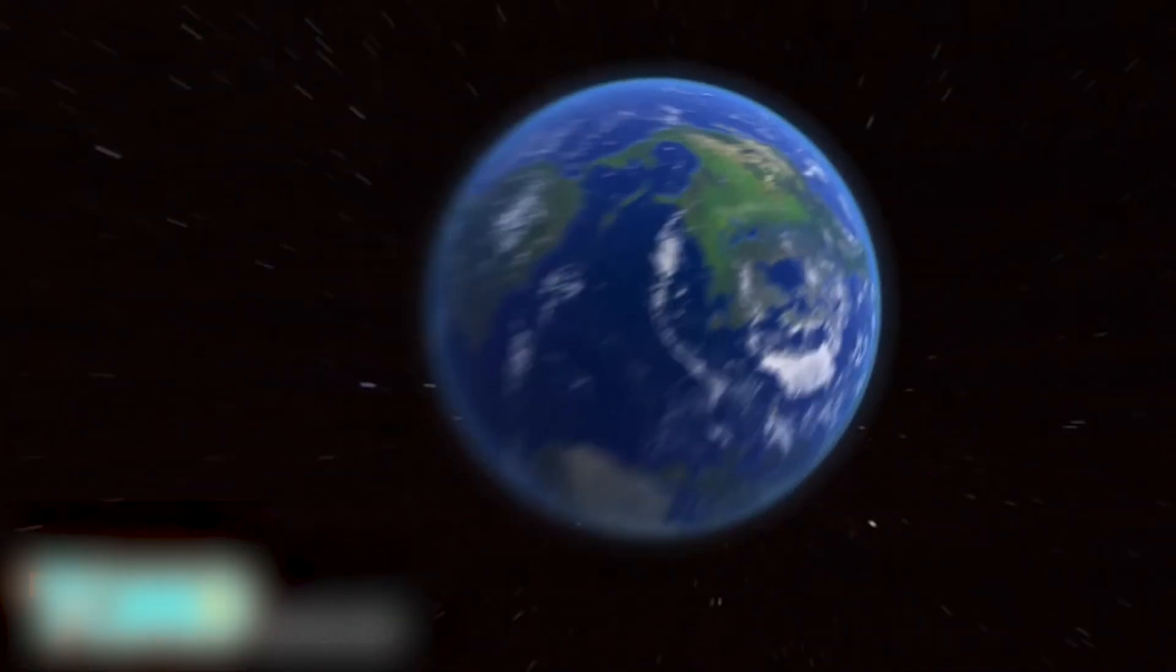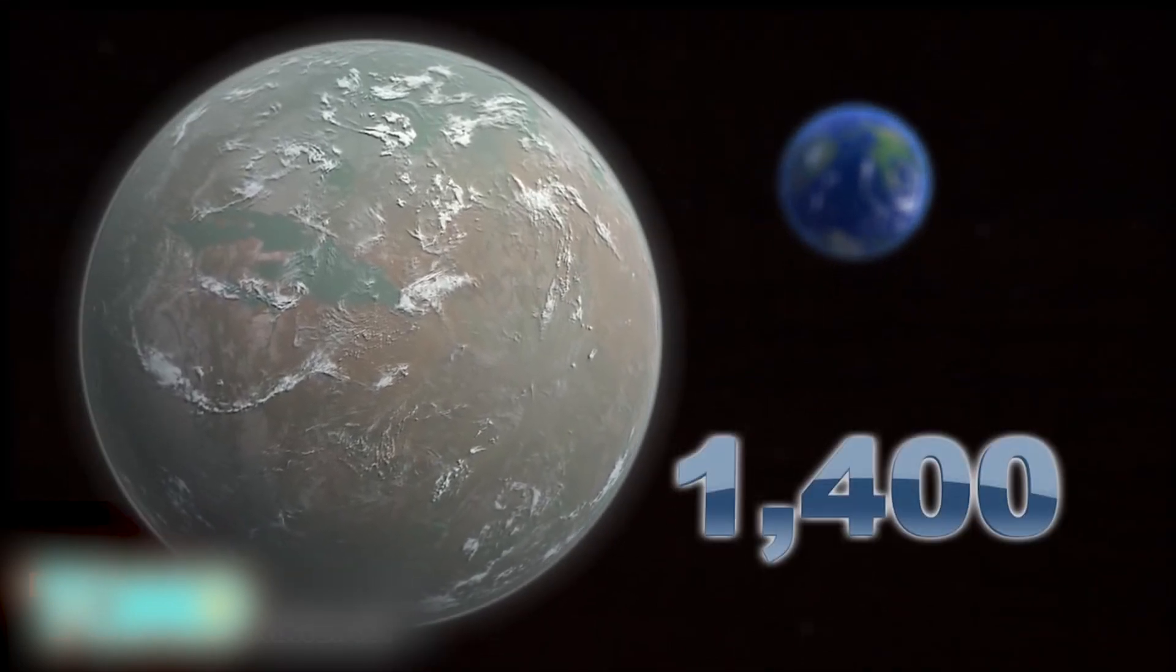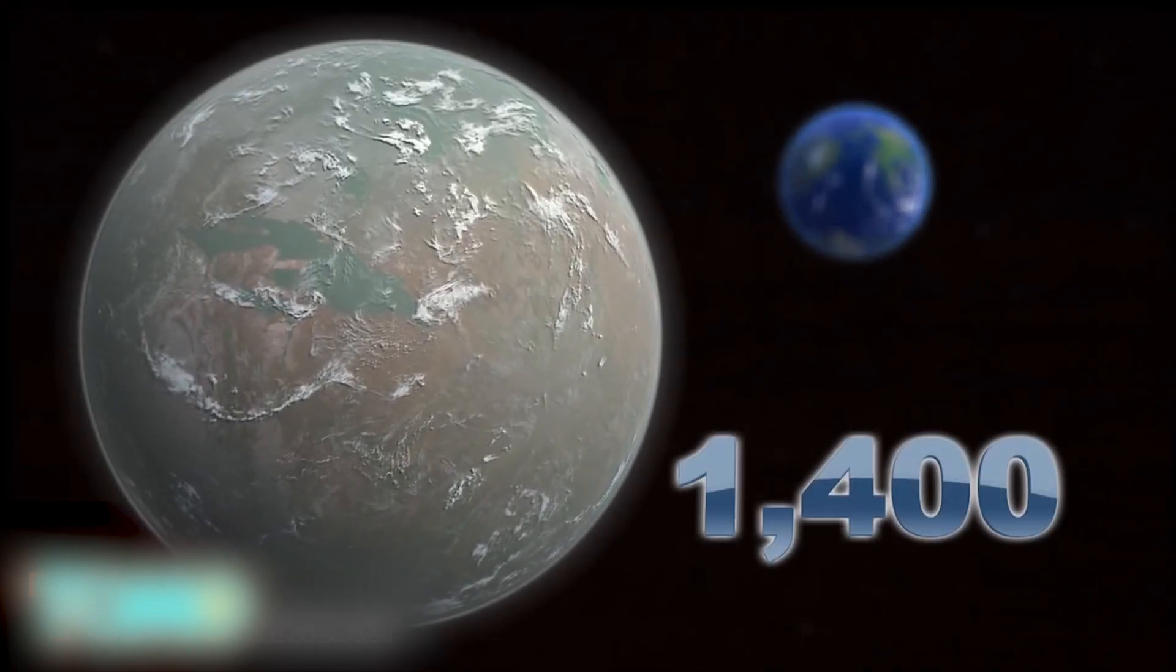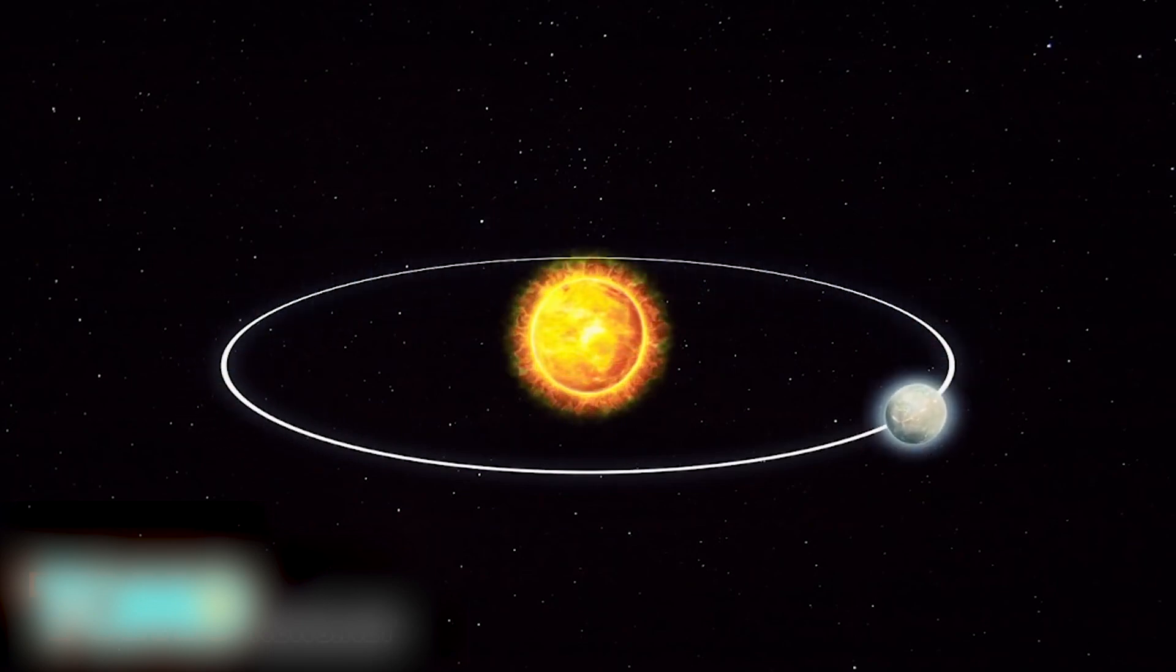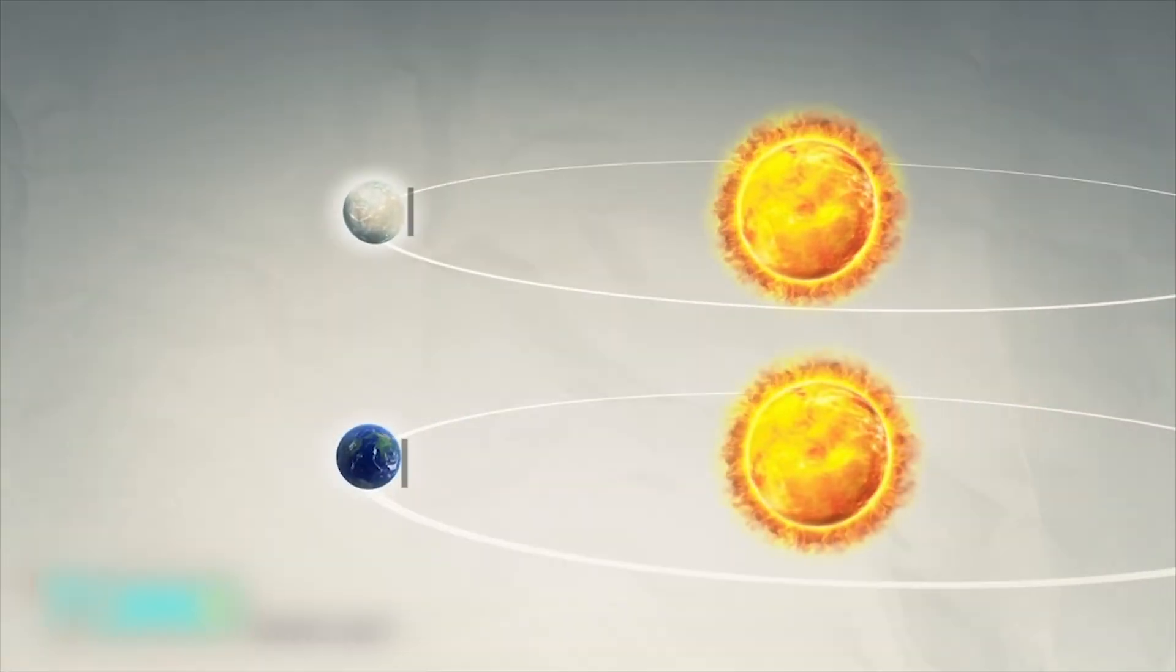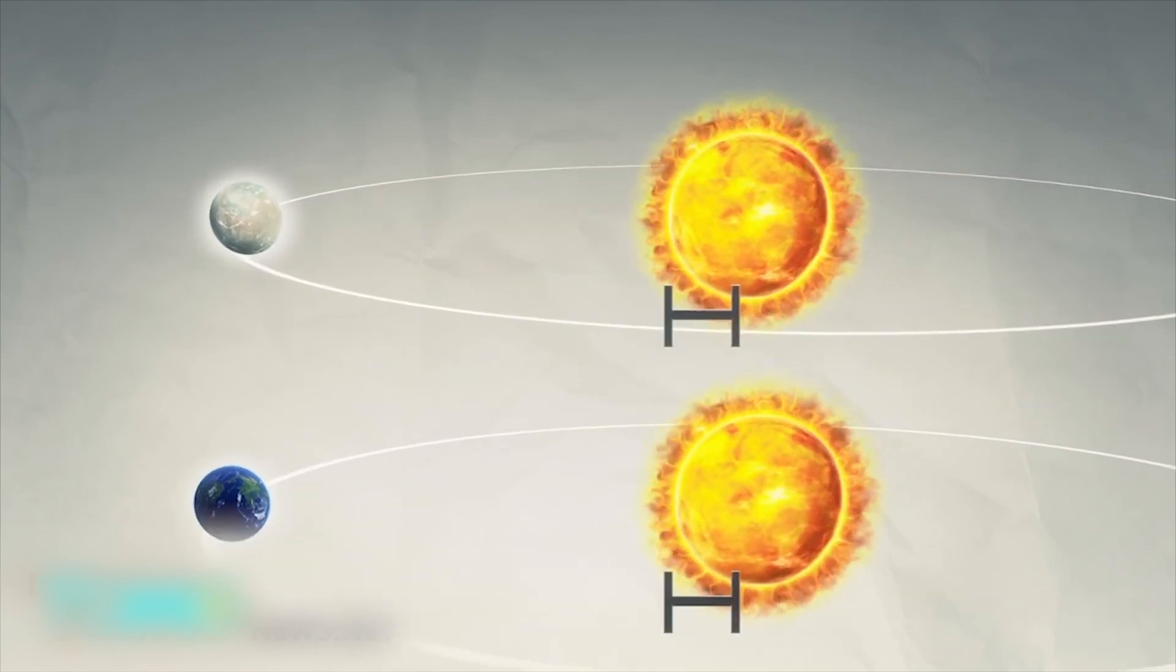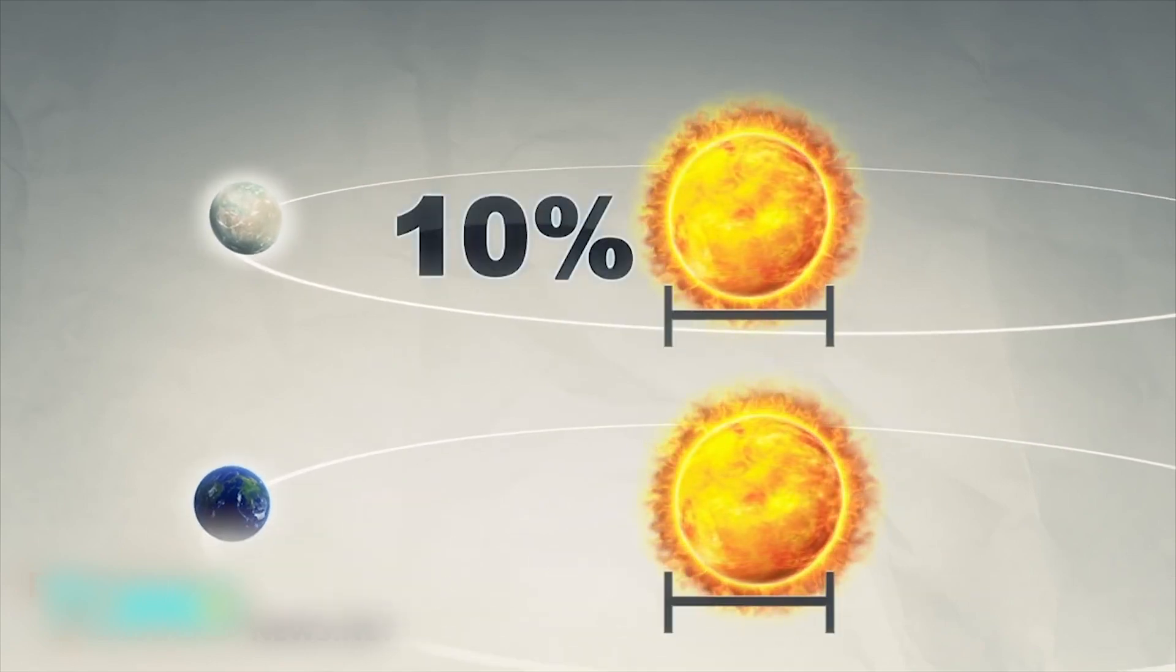Kepler-452b, a planet located 1,400 light-years away from Earth, has been announced as the most Earth-like planet ever found by NASA. The exoplanet orbits around a G-star similar to our Sun in a 385-day year in the constellation Cygnus. Kepler-452b is 5% farther away from its Sun than Earth is to our Sun, but receives the same amount of sunshine as its Sun is 10% larger than ours.